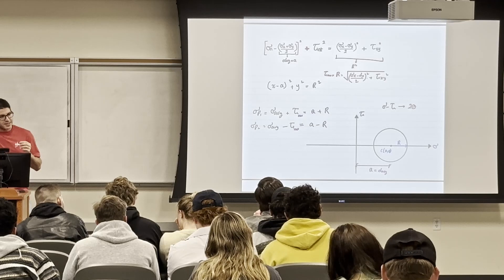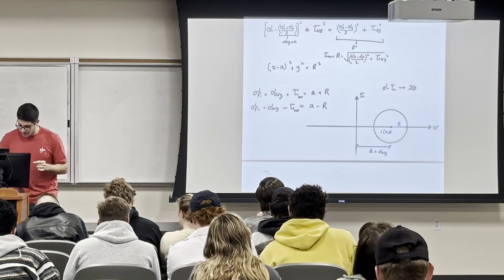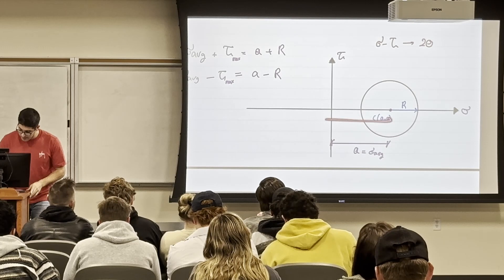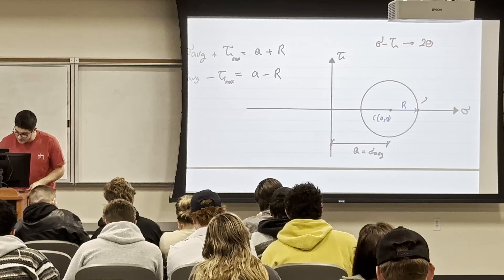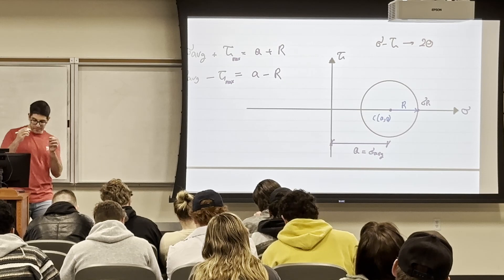Now: anything in the positive x-axis direction on the circle represents tensile normal stress, and anything in the negative direction represents compressive normal stress. Any point on the circle represents a combination of σ and τ — so any point on the circle is all the stress states that can arise when you rotate the element 360 degrees.